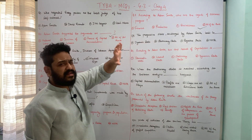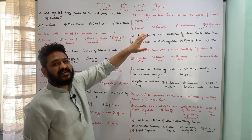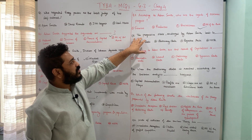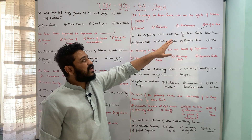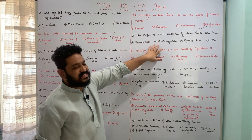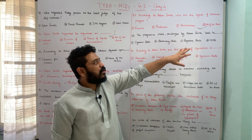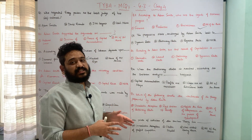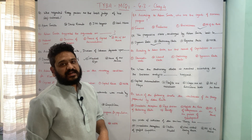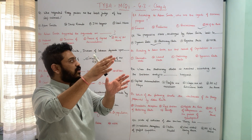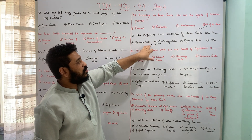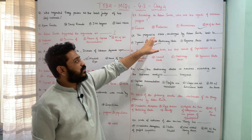The next question: the progressive state envisaged by Adam Smith leads to what — A dynamic state, B stationary state, C regressive state, or D none of the above? Progressive state as envisaged by Smith will lead to stationary state. Option B is the correct answer — from progressive state, we move towards stationary state.